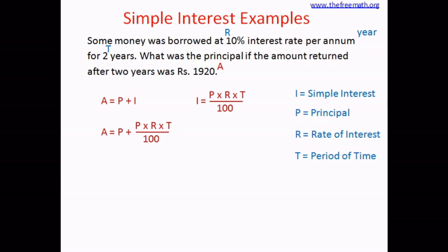Let's put all these values into our formula. So it looks like: 1,920 equals P plus P multiplied by 10 multiplied by 2 divided by 100. We have all the values except for P, because P is the principal — that is what we are supposed to find out. This problem has now reduced to just solving an equation.